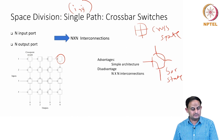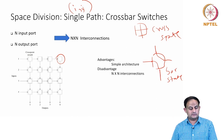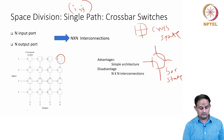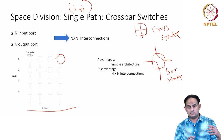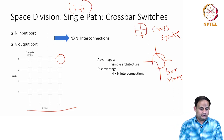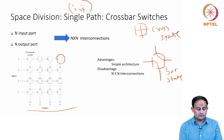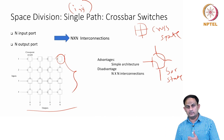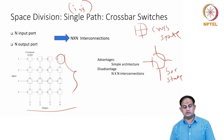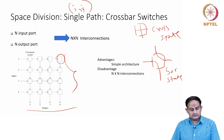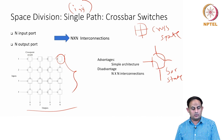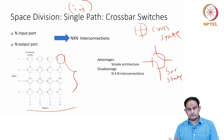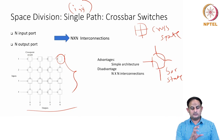The crossbar switch fabric has input ports on the left and output ports at the bottom. With four input ports and four output ports, there are 4×4 = 16 interconnection points inside the fabric. In general, with N input ports and M output ports, you need N×M interconnection points. One issue with this design is that the number of interconnection points grows quadratically — five input and five output ports require 25 interconnection points.